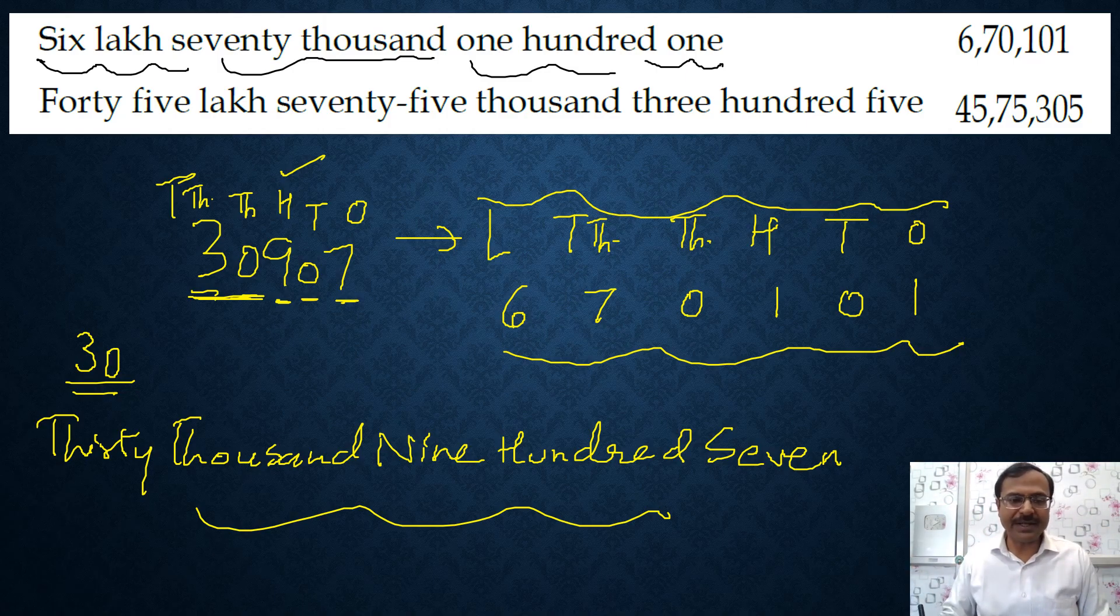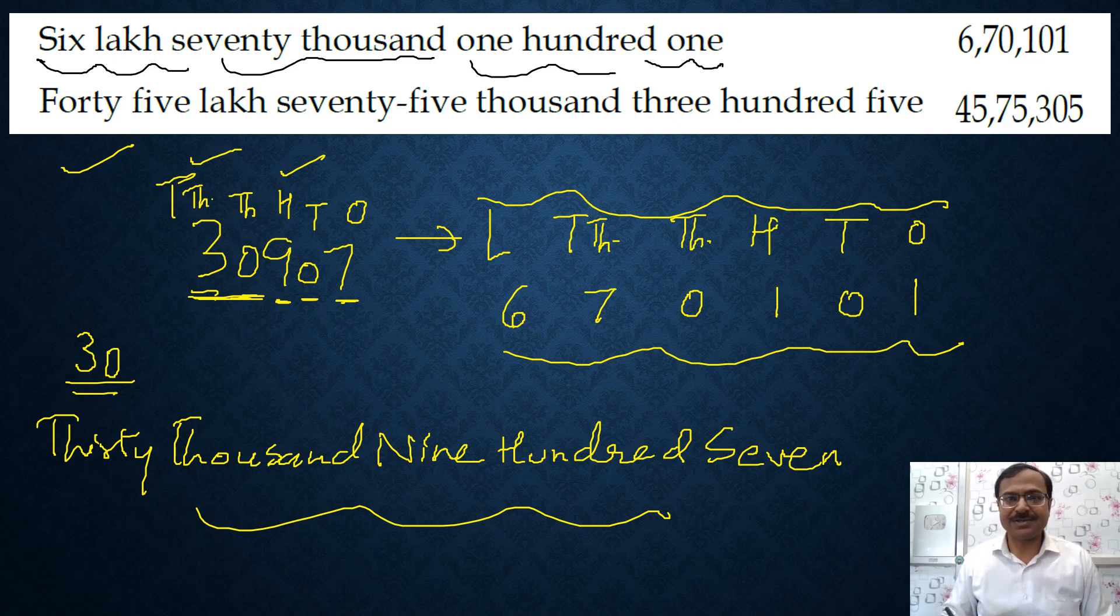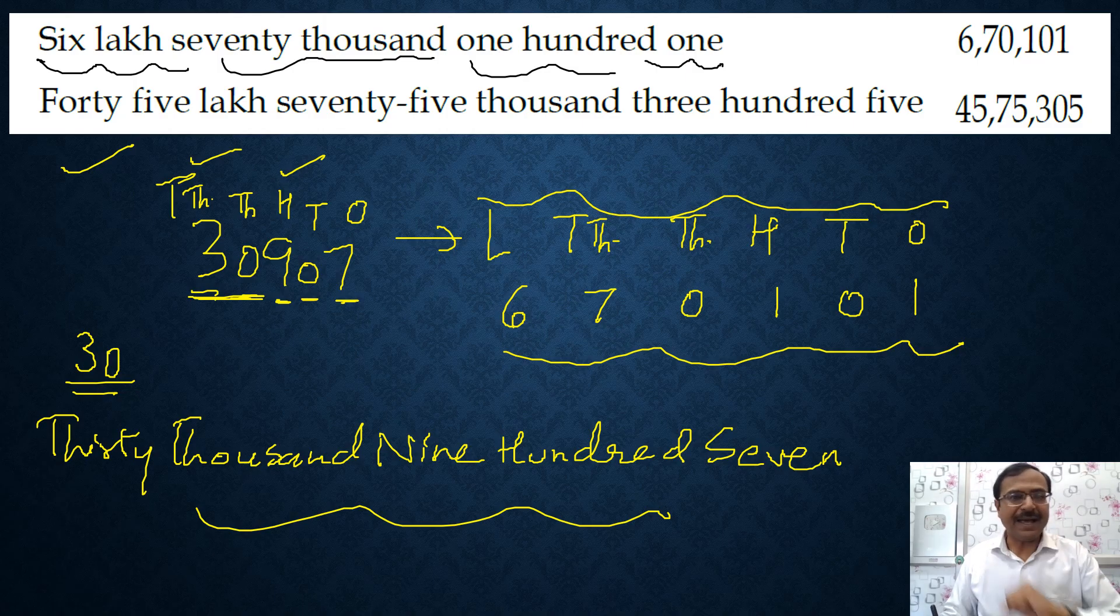You can see one more example I have given there. The example is forty five lakh. Forty five lakh, so for me this is seven digits. Why? Because forty five lakhs. If it is a single digit like in the example given above, six lakh, it is six digits. Forty five lakhs, now it is seven digits. And when you have seven digits you have to write up to ten lakhs.